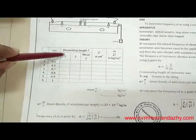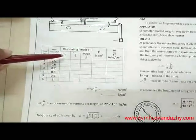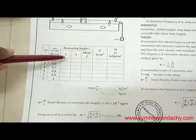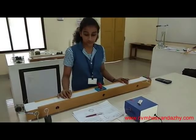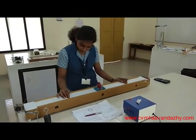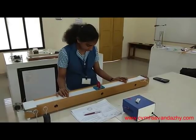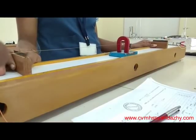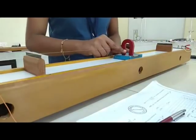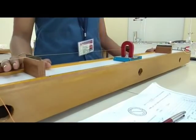We have the resonating length first, and that is 63.3. Now, we look for the second observation.